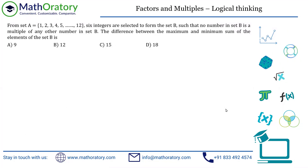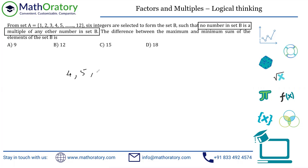This is a problem on factors — that is the main concern. Let us read the question and I'll discuss the working approach. Set A contains all natural numbers from 1 to 12. Six integers are selected from set A to form set B — a subset. The constraint is that no number in set B should be a multiple of any other number in set B.